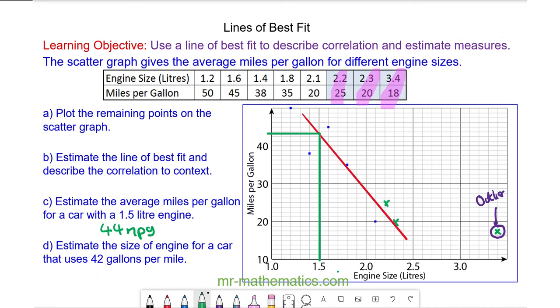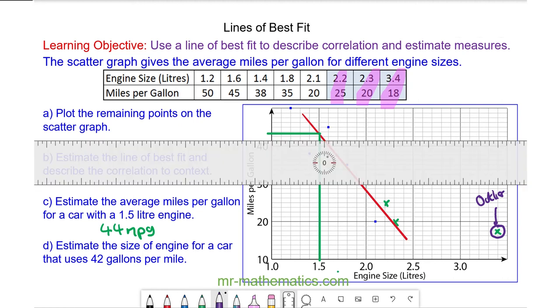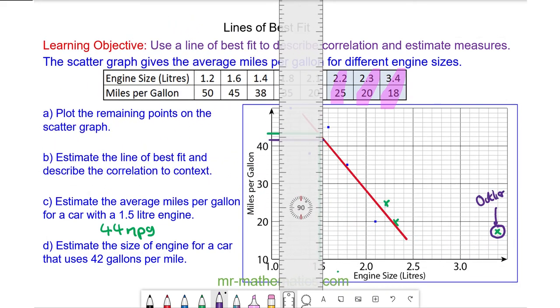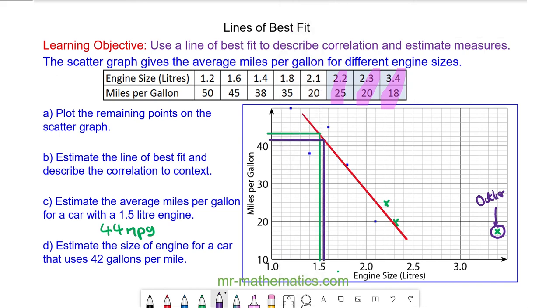Finally for question D, estimate the size of the engine for a car that uses 42 gallons per mile. We can draw a horizontal line at 42 to our line of best fit, then a vertical line going down. You can see this is likely to be 1.6 litres.